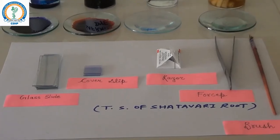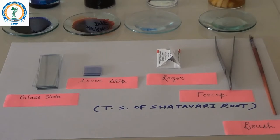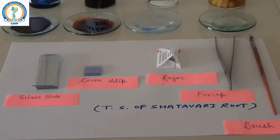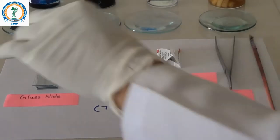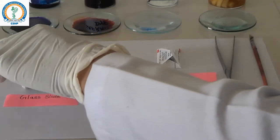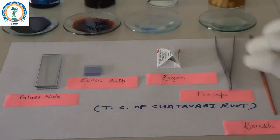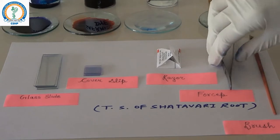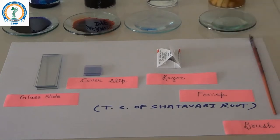Now we will discuss the microscopic characters of Shatavari root by preparing a transverse section. We will start by cutting the Shatavari root vertically using a blade.